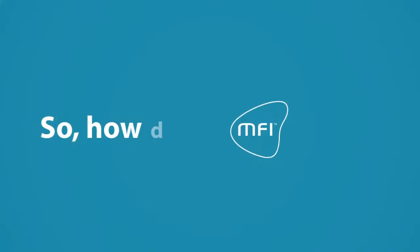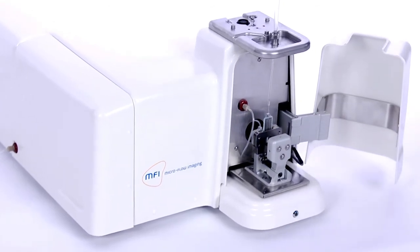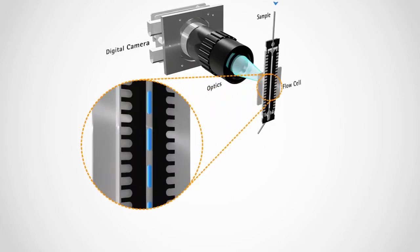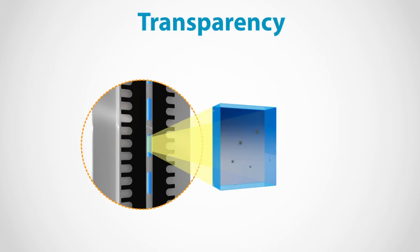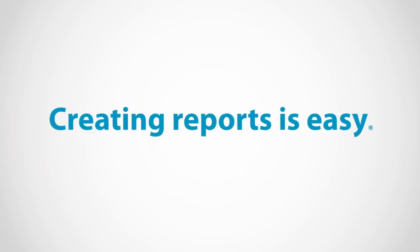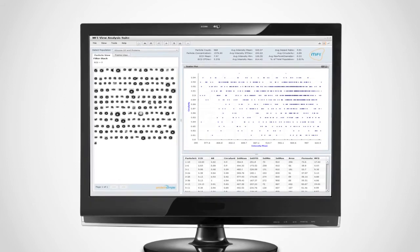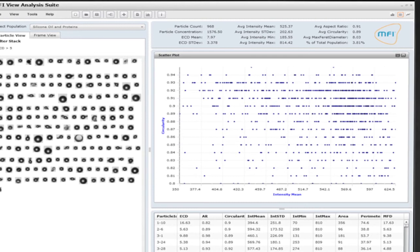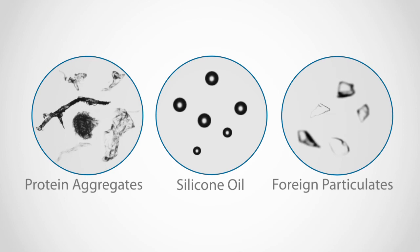How does MFI work? As the sample moves through the flow cell, MFI captures images and analyzes every particle. The system is precisely aligned for high sensitivity, and every particle is analyzed in real time for particle count, size, transparency, and morphology. Viewing data and creating reports is easy — simply set parameters to filter your data for size, intensity, and shape. You can differentiate particles such as protein aggregates, silicone oil droplets, air bubbles, and other foreign particulates.